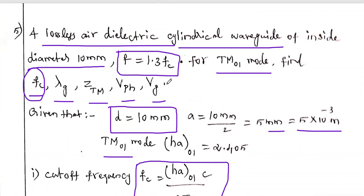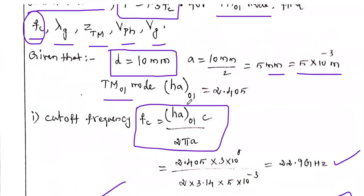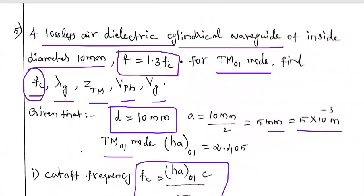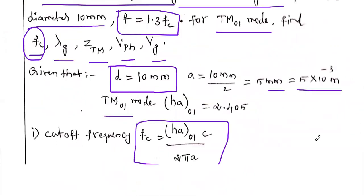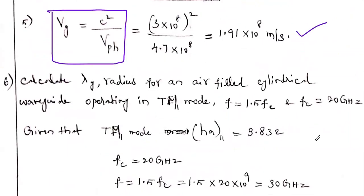The key differences in this problem: the frequency is not directly given — it is expressed in terms of the cutoff frequency, so you first calculate Fc then find the operating frequency. Also, the diameter is given in millimeters, so careful unit conversion to meters is required.